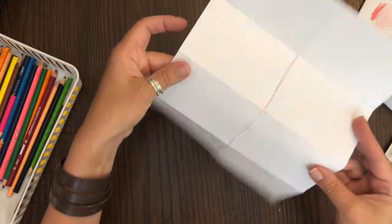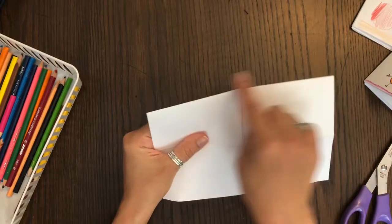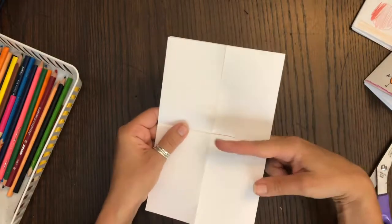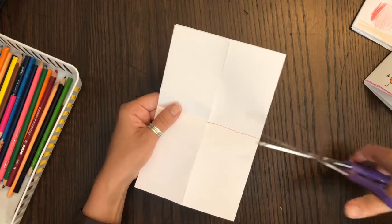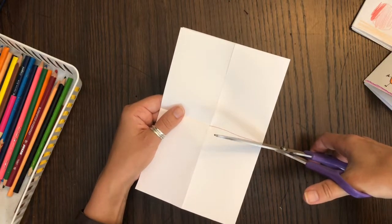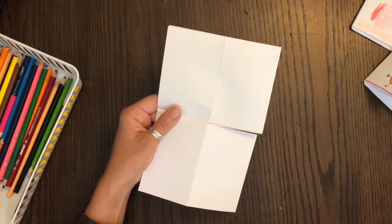Once you get a little bit more comfortable with making books you can just skip over that part, it won't matter. So here's my folded part at the top and then we're going to take the scissors and cut right on that red line that I just drew, stopping just before we get to that other folded line right there.